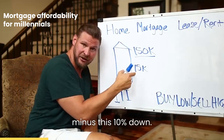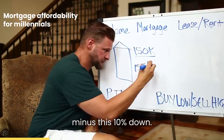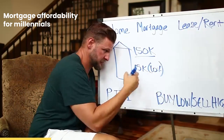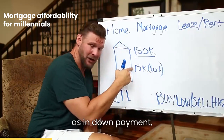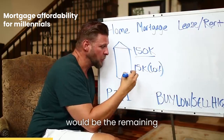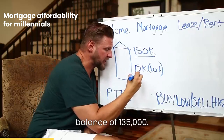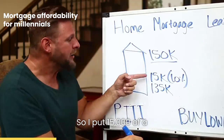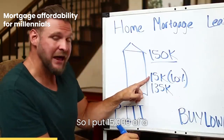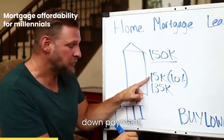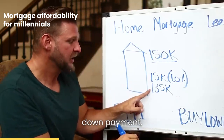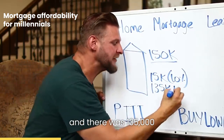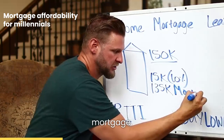A hundred and fifty grand minus this ten percent down — down as in down payment — would be the remaining balance of a hundred and thirty-five thousand. So I put fifteen thousand dollars as the down payment and there was a hundred and thirty-five thousand dollar mortgage.